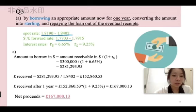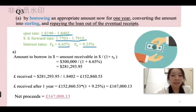The US interest rate for 12 months is 6.65% and the UK interest rate is 9.25%. The first method is by borrowing an export rate amount now for one year, converting the amount into sterling and repaying the loan out of the eventual receipts.